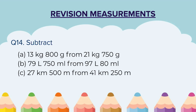Question 14: Subtract — A) 13 kg 800 grams from 21 kg 750 grams, B) 79 liters 750 milliliters from 97 liters 80 milliliters, C) 27 kilometers 500 meters from 41 kilometers 250 meters. For part B, take care of the number of digits in milliliters.